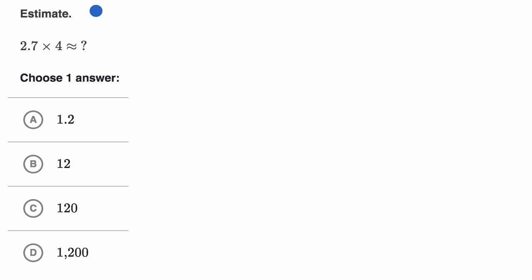All right, so we could think of 2.7 times four as being approximately equal to... Well, 2.7, that's two ones and seven tenths. What's the nearest whole number to 2.7? 2.7 is pretty close to three.